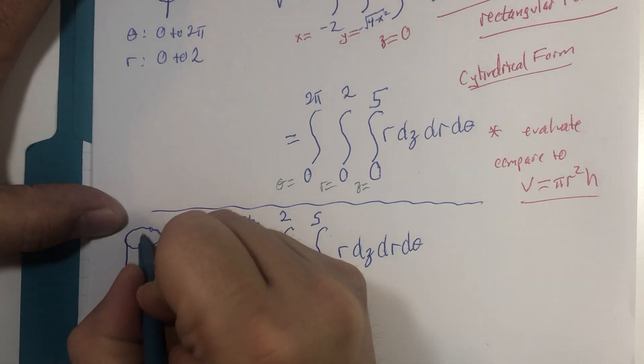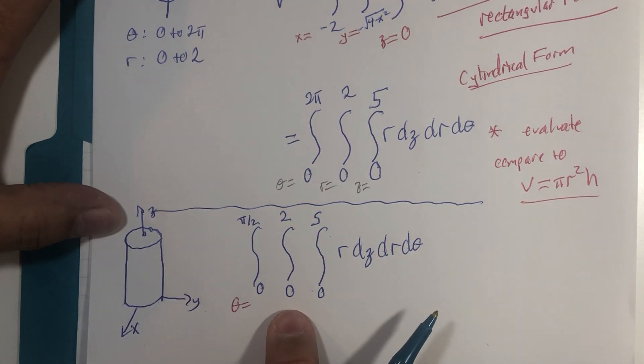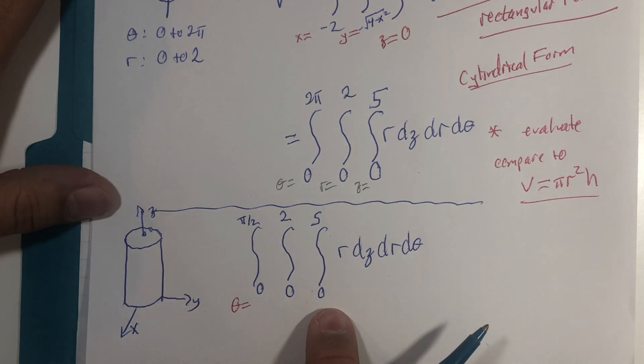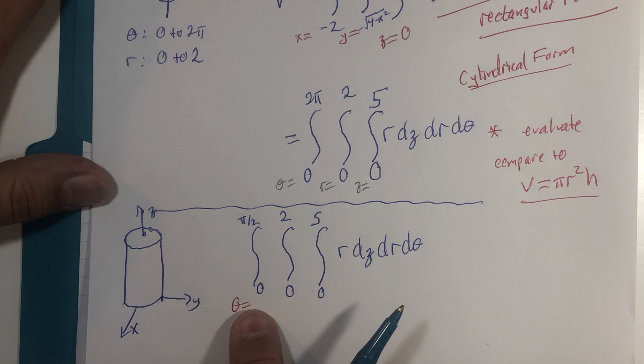What would have changed in our three-dimensional object? The radius of the circle is still two. And the boundaries are from zero to five in the Z direction. So what does it mean if we only have theta goes from zero to pi over two?